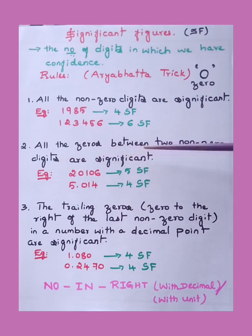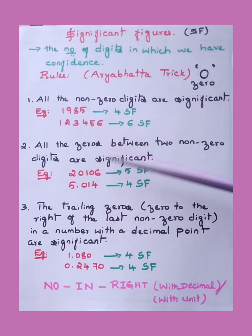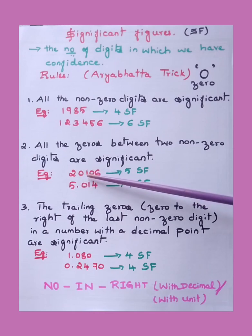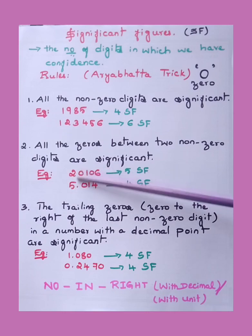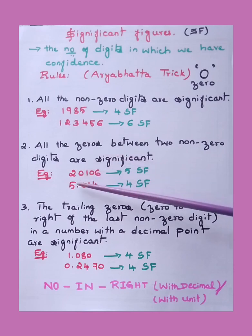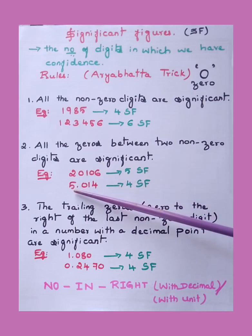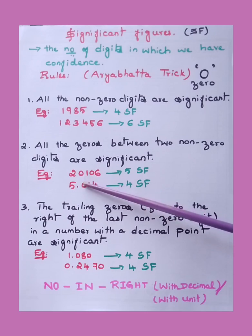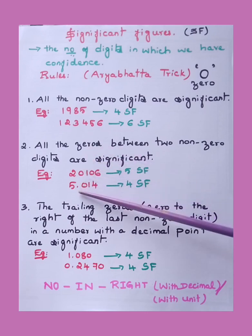Second golden rule: all the zeros between two non-zero digits are significant. For example, the number 5.014 — even if zero is in the middle, no problem. All zeros between two non-zero digits are significant. Hence, one, two, three, four — four significant figures.